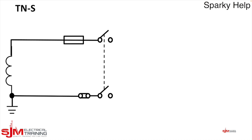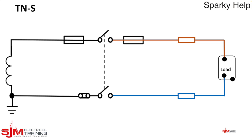So let's start to draw the TNS. We've got the line conductor and that comes out and we'll have an overcurrent protective device and we'll connect to the load. Obviously for it to work, we need the neutral. So there's the neutral return current path.